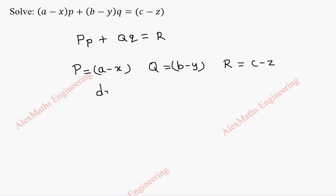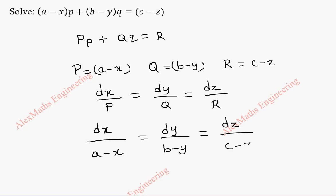To get the solution, we have to solve dx by P equal to dy by Q equal to dz by R. By substitution, dx by A minus X equal to dy by B minus Y equal to dz by C minus Z.